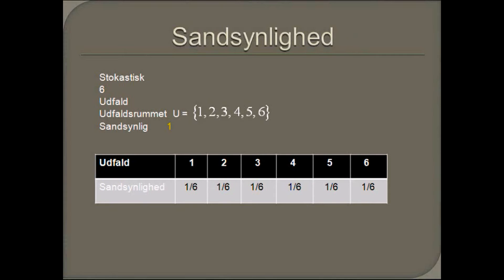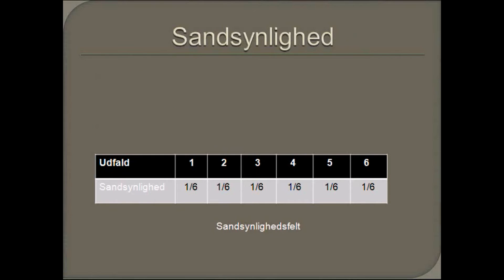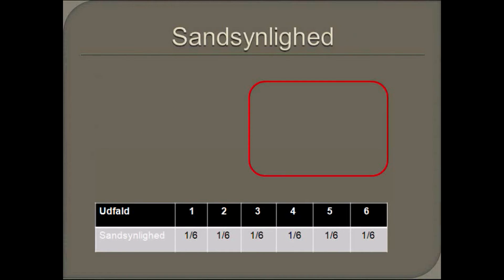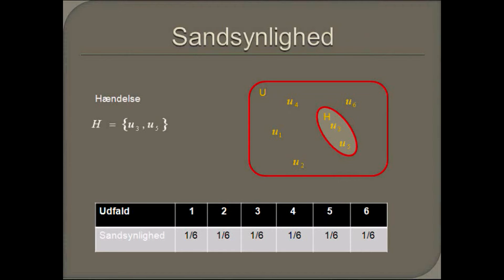Vi kan også være 100% sikre på, at vi får mellem 1 og 6 øjne næste gang vi kaster en terning. Tabellen kaldes et sandsynlighedsfelt. Nogle gange illustrerer man et udfald med et symbol. I dette eksperiment, hvor vi kaster en terning, vil resultatet altid være et udfald. En hændse H er altså en delmængde af udfaldsrummet.